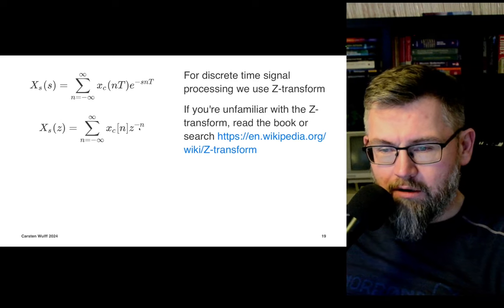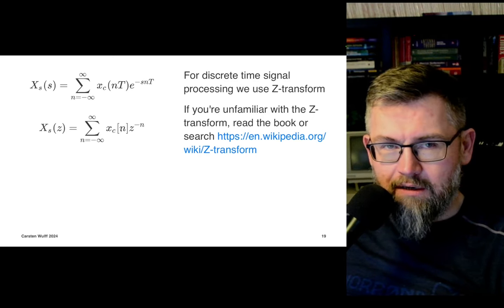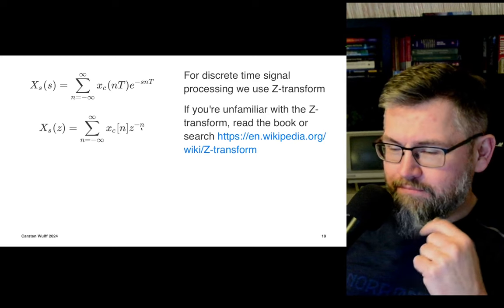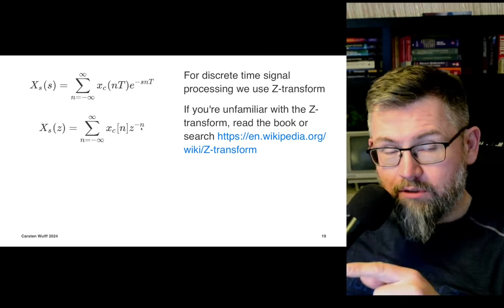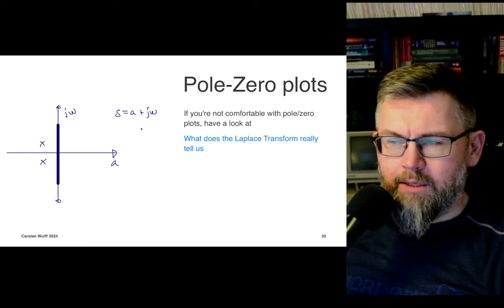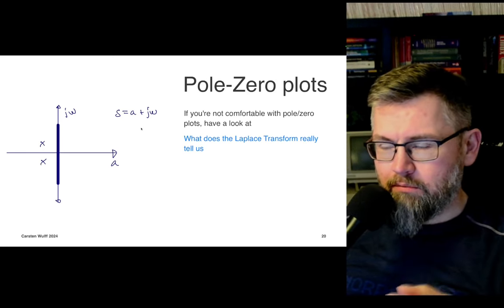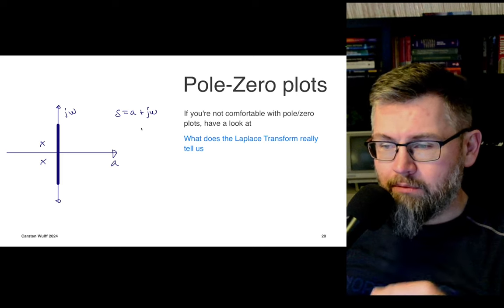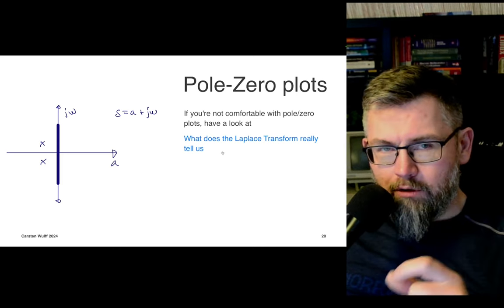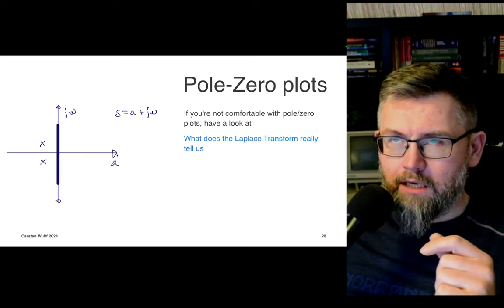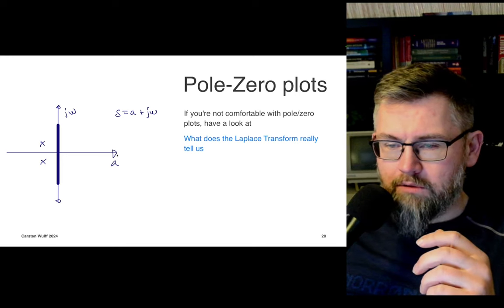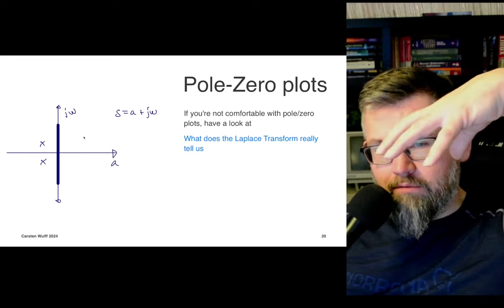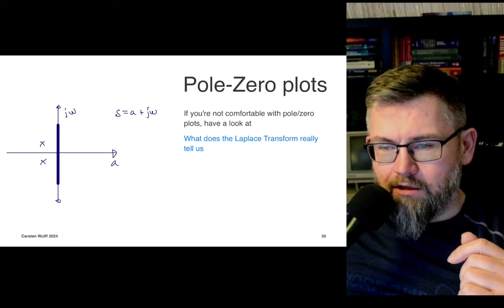Have a look at the Z-transform if this is unfamiliar, and maybe a quick recap of stability and pole-zero plots. There's a really good video by 3Blue1Brown linked in the notes. It's easy to get confused with pole-zero plots. What we're showing is really looking from above onto a 2D plane of the complex value s, where s equals some real value plus jω — jω being the frequency part.